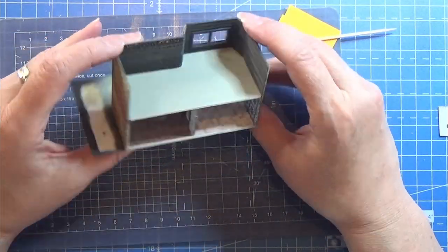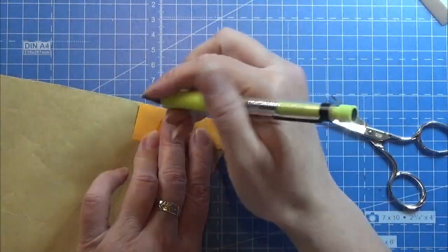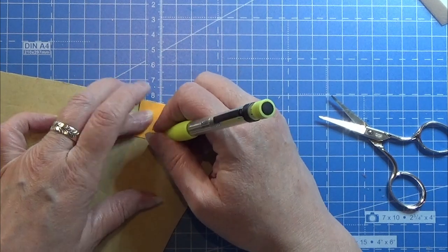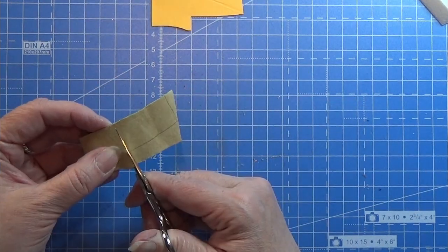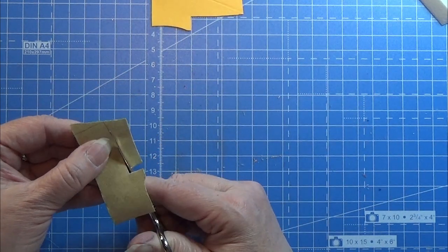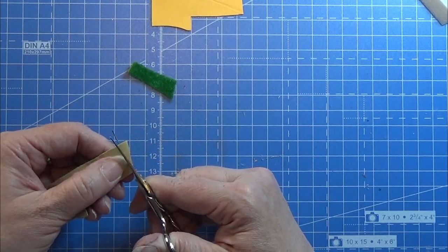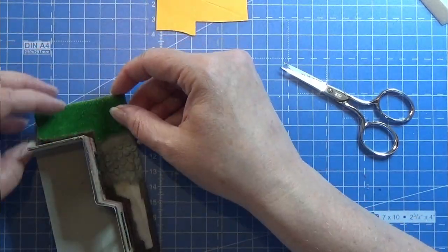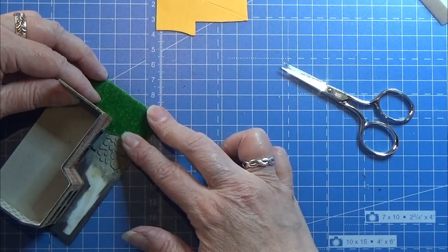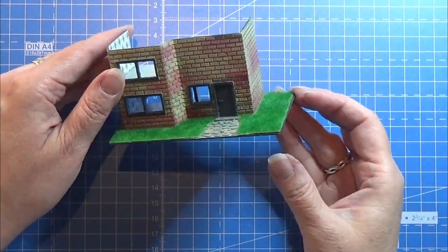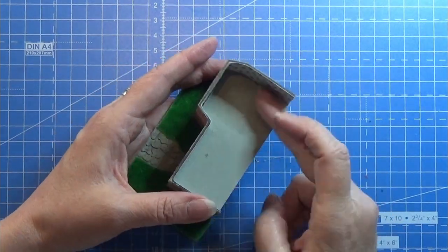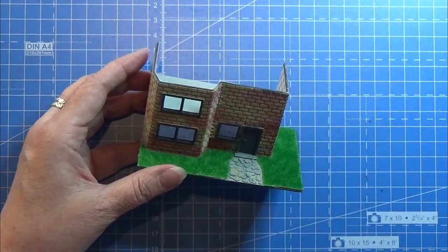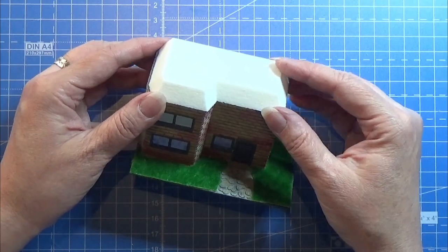I made a template for the outside of the house and now I'm cutting out pieces of green grass paper that I've had for a long time. I'm going to use that for making the green outside.